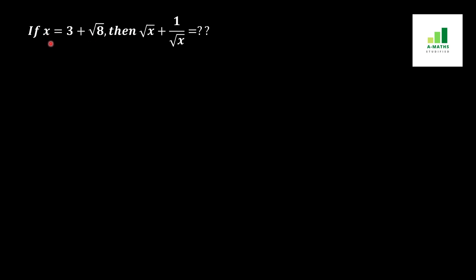In the first step we will find the value of 1 over x. In order to find the value of 1 over x, we will take the reciprocal of x, where x is equal to 3 plus under root 8, and we will get 1 over x is equal to 1 over 3 plus under root 8. This value is complex inside a denominator, so we need to simplify it.